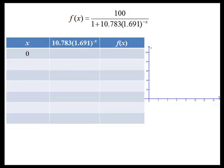For instance, when x is zero, the exponential piece is actually kind of large, so the f of x value is kind of small. Now as x increases, that exponential piece is going to decrease because it has a negative exponent, causing the denominator to decrease and the overall function value to increase.